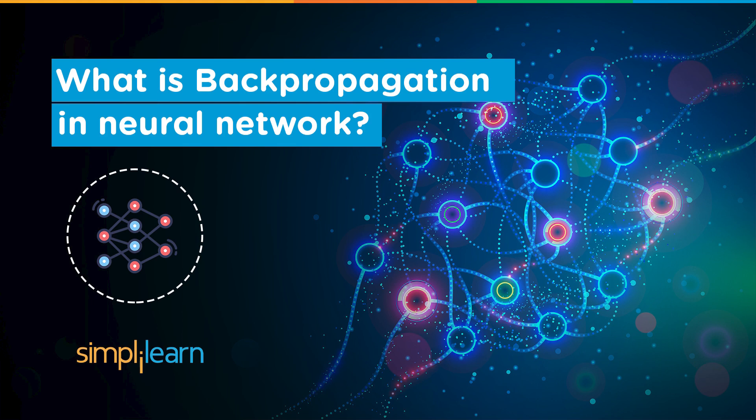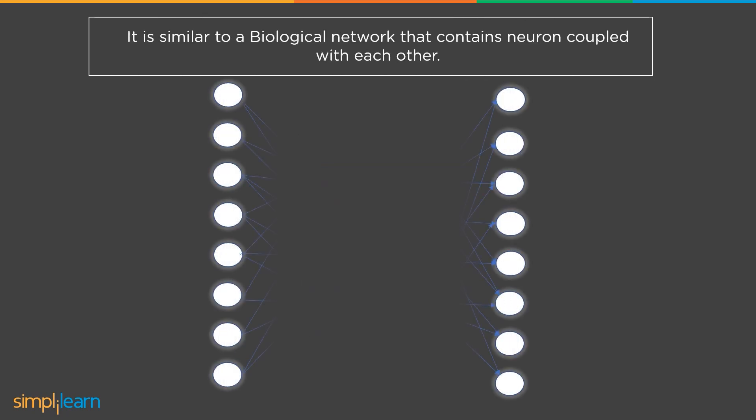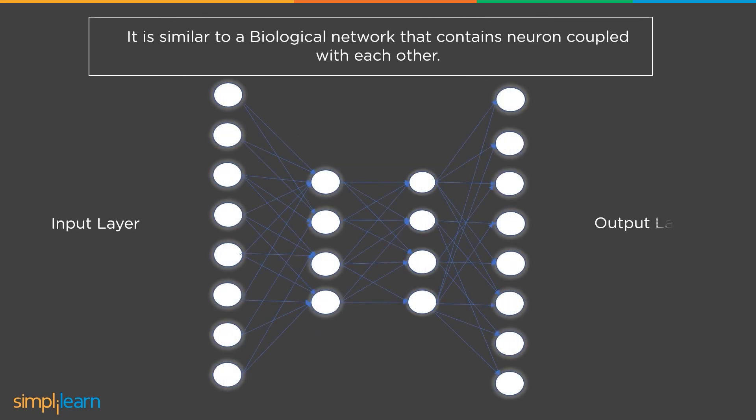Coming to backpropagation in neural networks, the concept was first introduced in the 1960s. An artificial neural network is made up of bunches of connected input and output units, each of which is connected by a software program and has a certain weight.